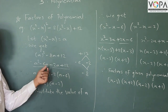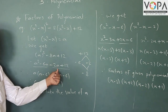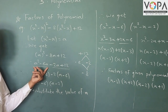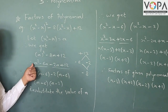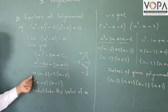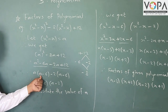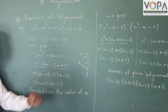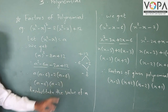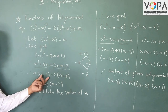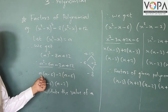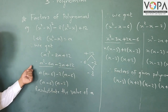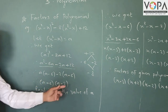Now expand the middle term: a² − 6a − 2a + 12. Make two groups of two terms. In the first group, a² and −6a have a common factor a, giving a(a − 6). In the second group, −2 and 12 have common factor minus 2, giving −2(a − 6). The common bracket is (a − 6), so the factors are (a − 6)(a − 2).